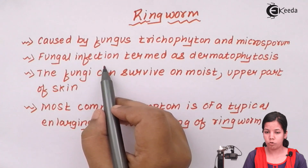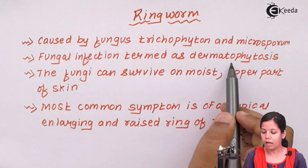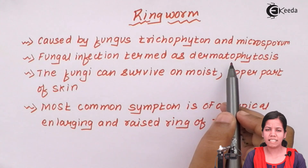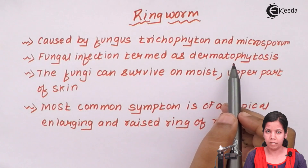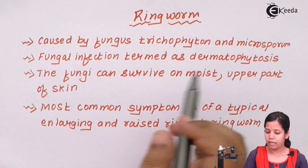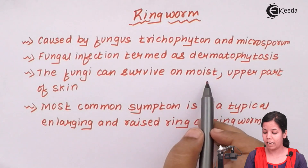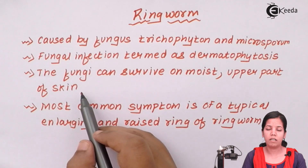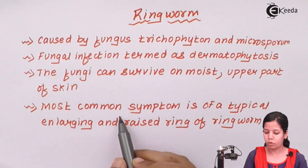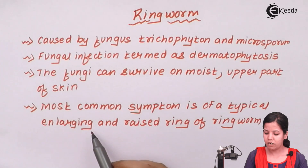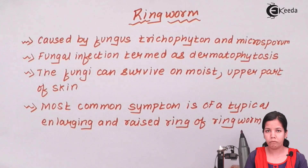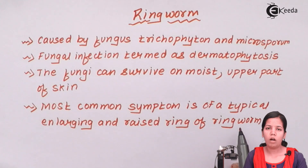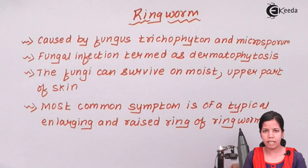Being a fungal infection, it is also termed as Dermatophytosis — an example of any infection that occurs at the dermal layer or upper layer of your skin. This fungus can survive in the moist upper parts of your skin. If there is moisture present and it is not clearly wiped or pat dried, there are chances that this fungal or yeast infection can grow very rapidly. The most common symptom is an enlarging, raised ring — basically a circular red inflamed region behind your ear, on your earlobe, or on your hand region.